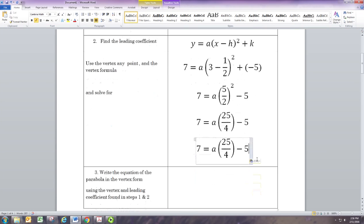Now to get a by itself we need to get rid of this 5, so we're going to add 5 to both sides. Negative 5 and positive 5 add to 0, and 7 plus 5 is 12.